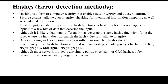In a data link layer, these hash methods are used for detecting the errors which are present in the data. Hashing is one form of computer security that enables data integrity and authentication. Data integrity means whether the data is having some error or not, whether the user or attacker has attacked on data or not. For that purpose, we are using hashes.